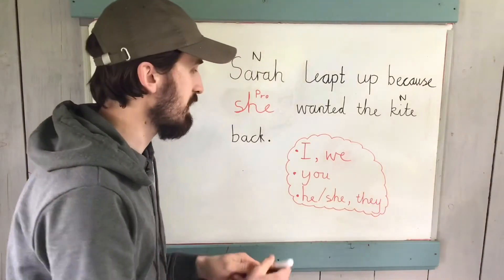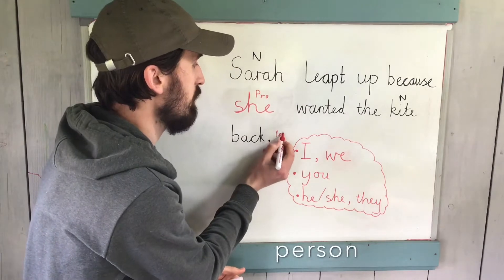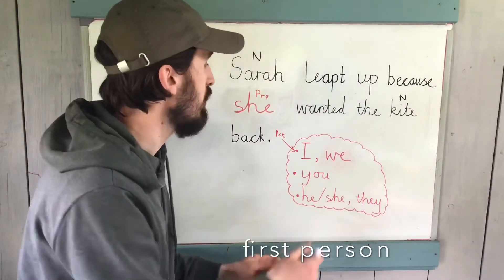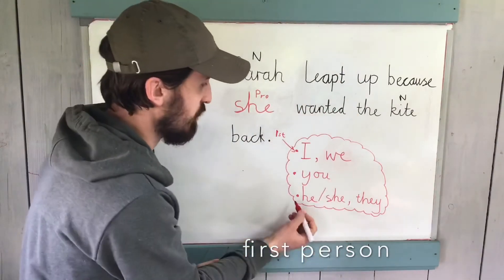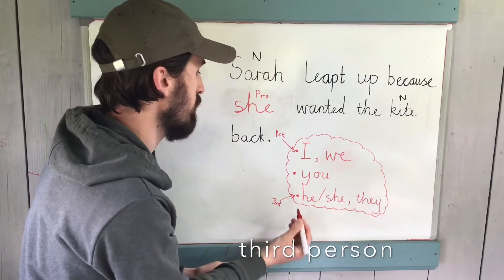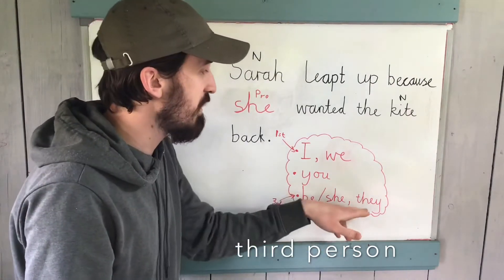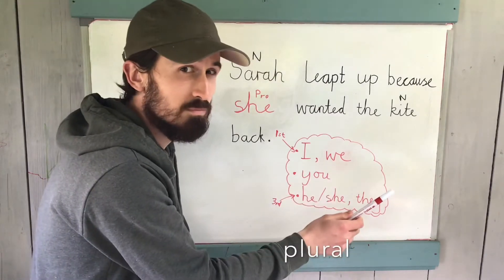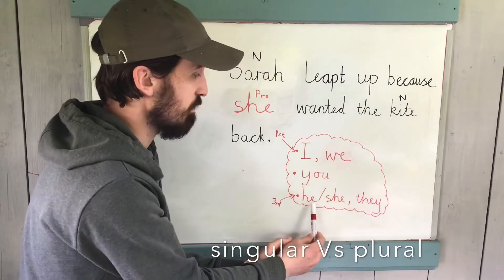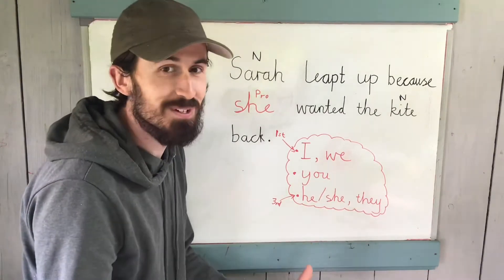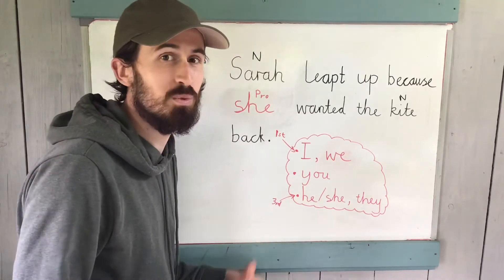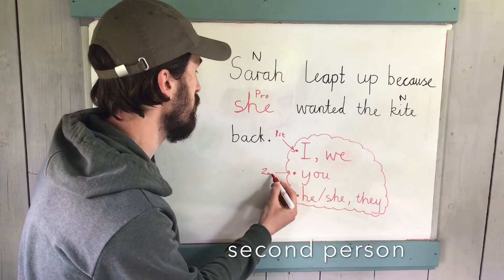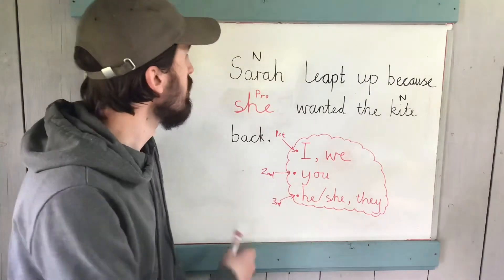What we should be starting to see here is that this is about the person. This is the first person — so these are just a couple of first person personal pronouns: I or we. In this case, the sentence here is actually written in the third person — so you've got he, she, they. Now notice that we and they, even though they're in different persons, that's a case of plural — singular versus plural. This one is the lesser-used second person, and there's a personal pronoun there of you.